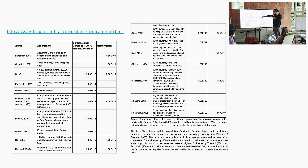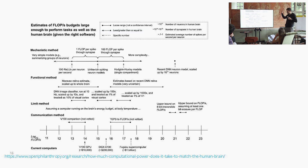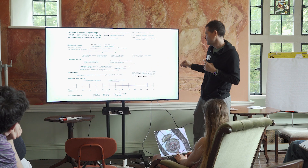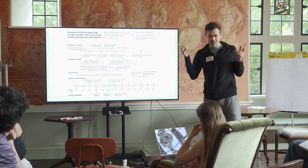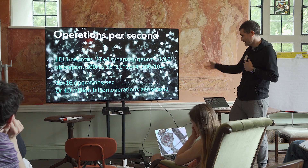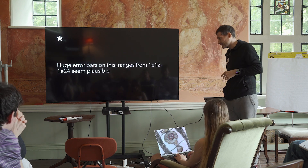This is a slide from the first whole brain emulation roadmap. It took a bunch of different estimates from literature, with Anders — ranging from 10^12 to 10^28 — a pretty big range. A more recent estimate is summarized in this table: log10 flops, mechanics method, functional method, limit method, and communication method. I'm mostly going to just assume it's something like 10^16 flops — it's kind of in the middle. It's sort of synaptic fires per second times the number of fires, and that yields roughly 10^16. Huge error bars obviously.